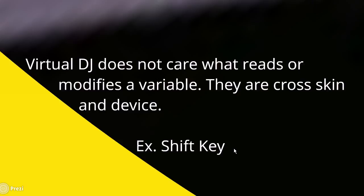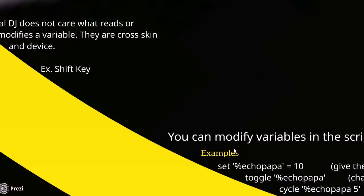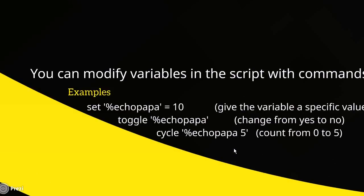You can modify variables in scripts with commands. For example, 'set EchoPapa equals 10' gives the variable a specific value — if you read '%EchoPapa' it returns 10. You can toggle a variable, which changes it from yes to no — that ties back to those flags. And you can cycle a variable, which is good for counters. If you want something to perform five different actions, you can cycle through them so each press performs a different function.